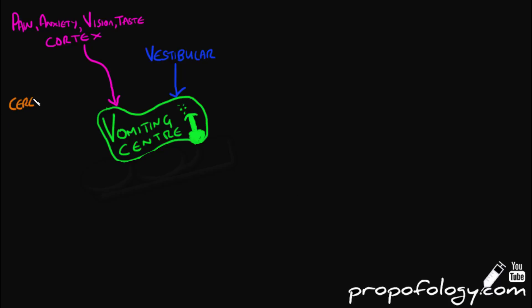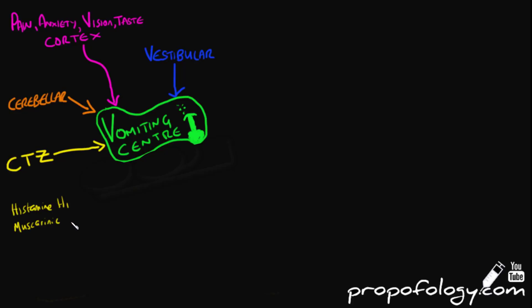Importantly here, the chemoreceptor trigger zone lies in the area postrema of the floor of the fourth ventricle, just outside the blood-brain barrier. Because it is outside the blood-brain barrier, it is well placed to detect noxious stimuli. There are loads of receptors in the chemoreceptor trigger zone: histamine or H1, muscarinic, dopaminergic, serotonergic, opioid, alpha-1 and alpha-2 adrenergic receptors.